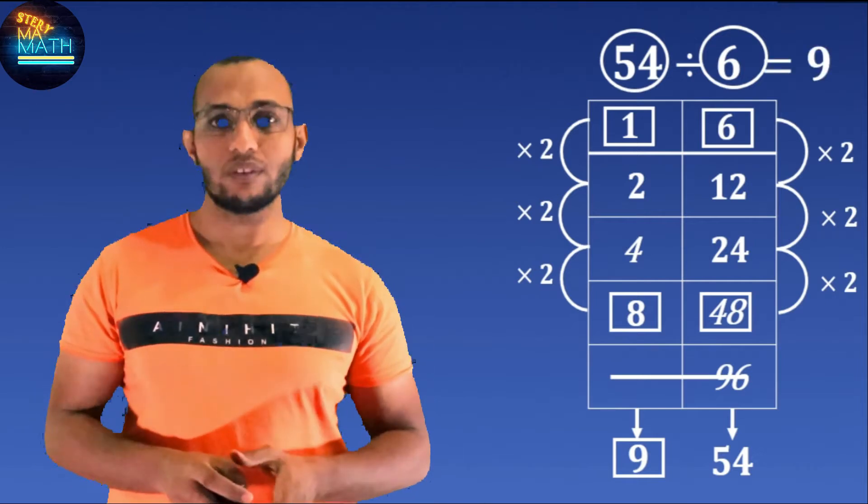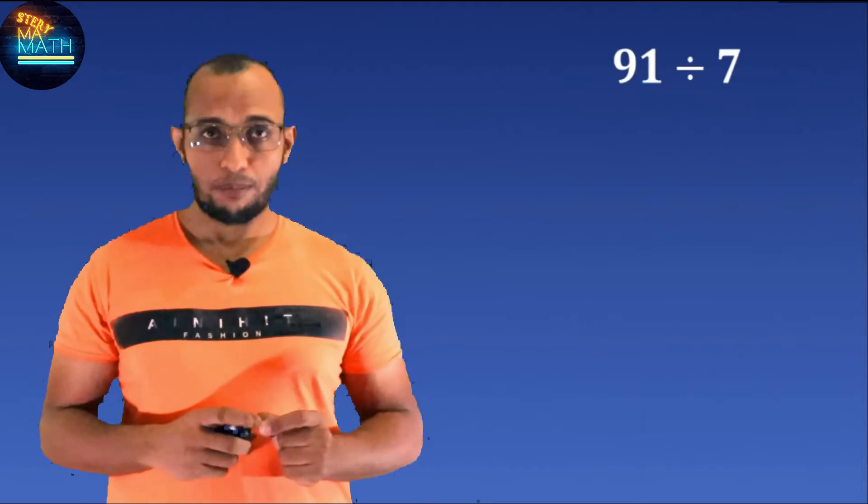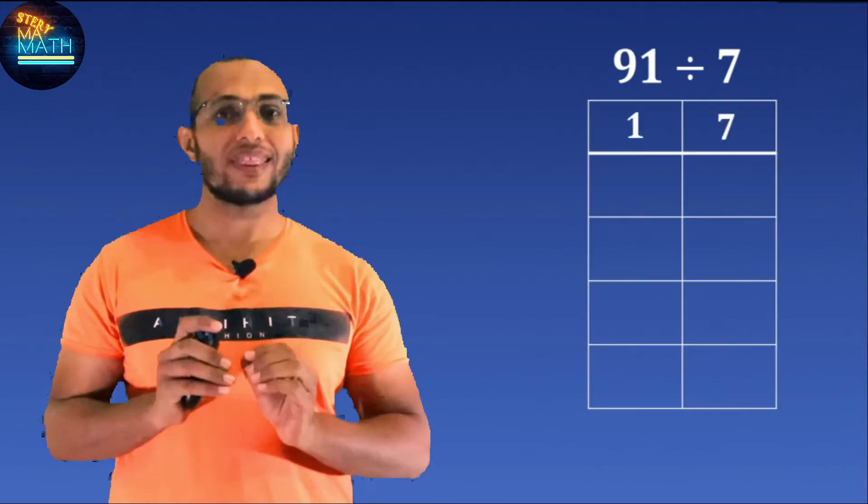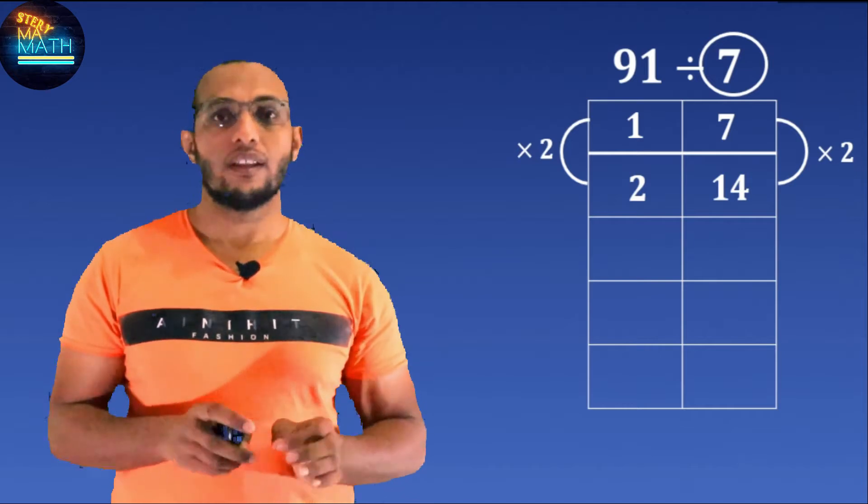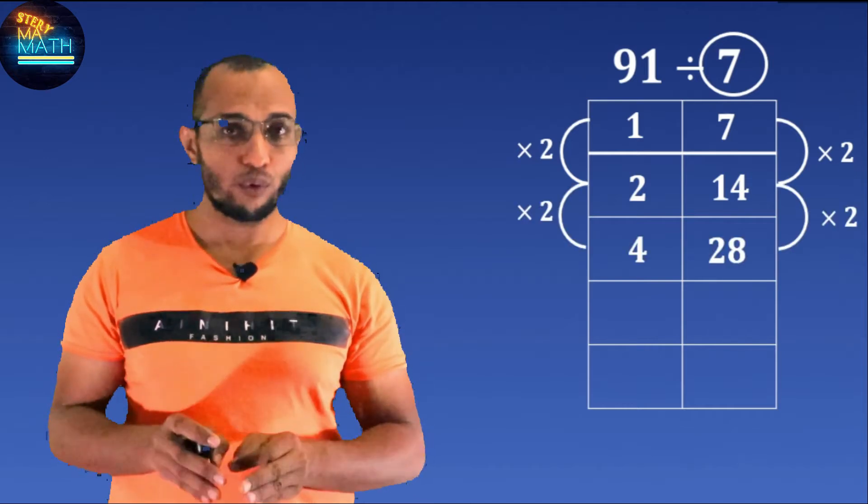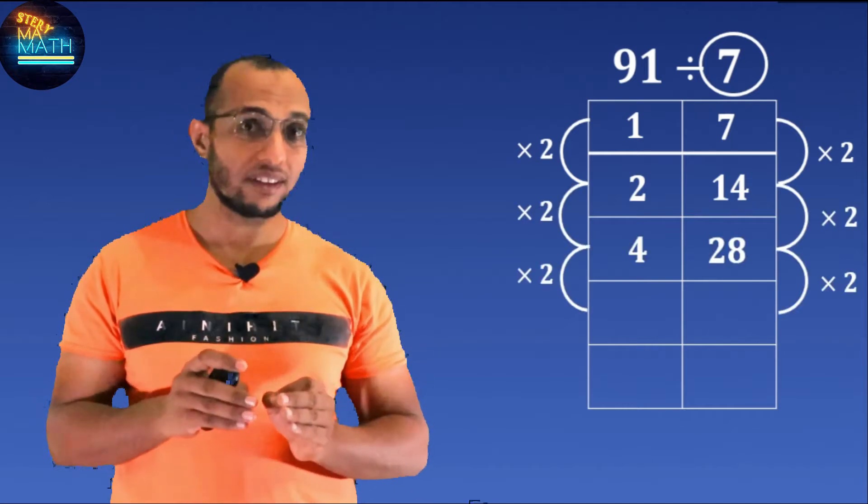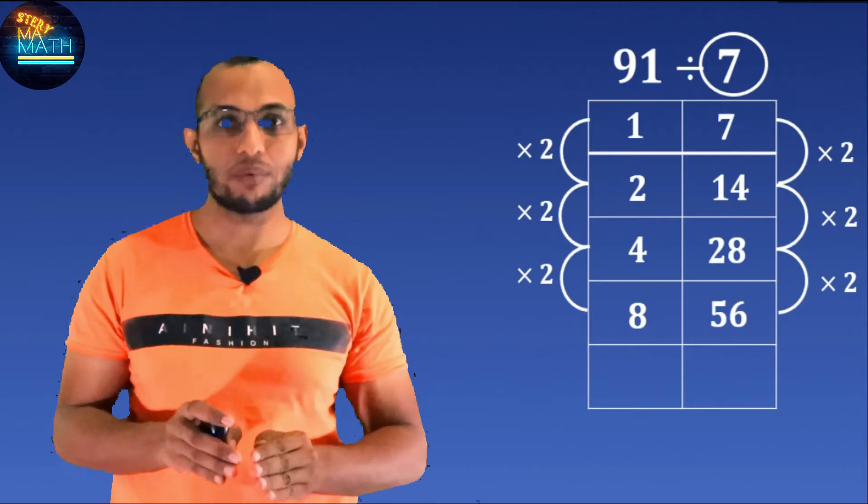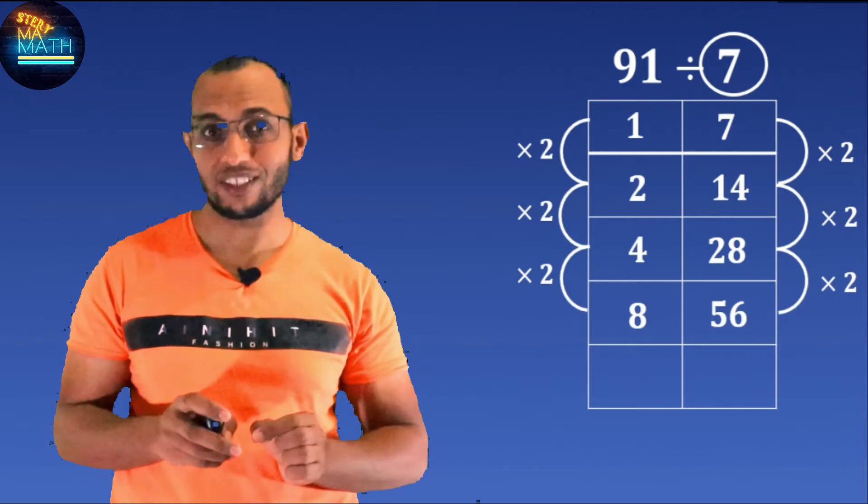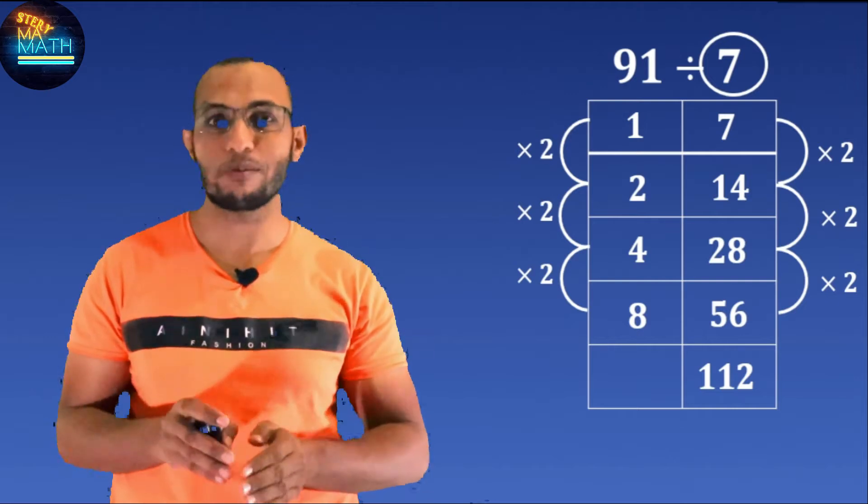Let's move on to the next example and pursue the same way. Here in this example, one part represents 7. Double these two numbers to get 14 and 2. Double it again to get 28 and 4. Double it again to get 56 and 8.